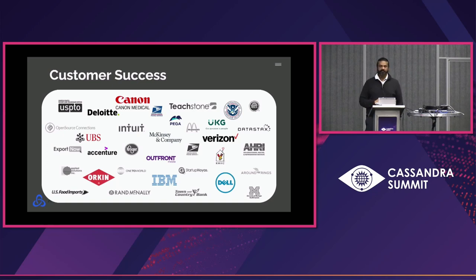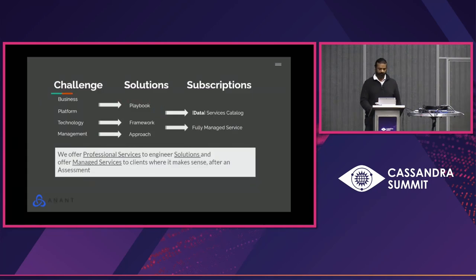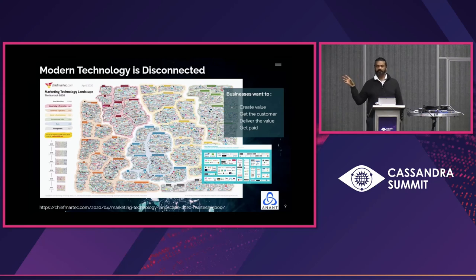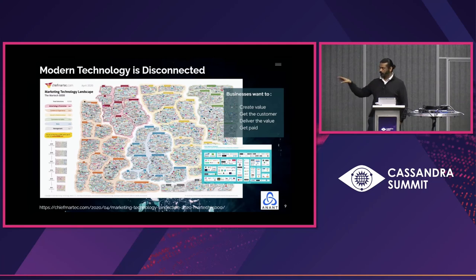We've worked with a lot of companies you probably interact with, and these companies end up using databases like Cassandra because that's the only database in town at that point that'll work. We look at our company as a people and knowledge company — ultimately we're solving problems for people. Modern technology is very disconnected. This is a picture from 2020 of the marketing technology stack: in a consumer-oriented company the marketing stack is where a majority of data comes from, and how do you consume and process that information so it can help you make decisions?